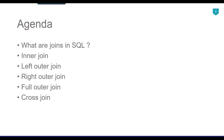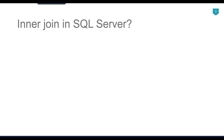We will see all of these with examples in detail, but in this particular video we will focus on the inner join in SQL Server. Inner join returns only the rows from both tables that have matching values in the specified columns. Let's see this with an example and jump to the demo.